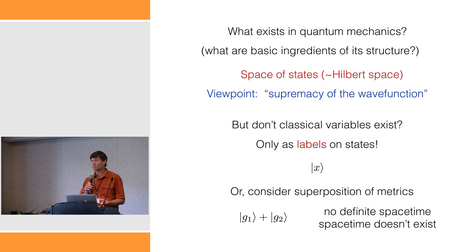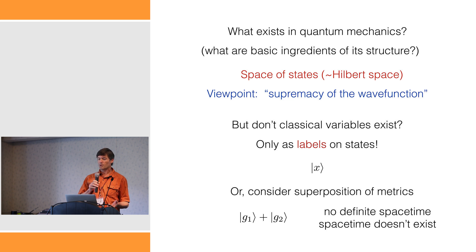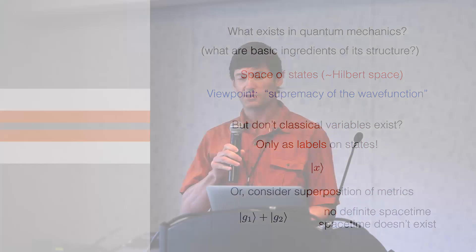If you think about the classical metric — does that exist? Or classical space-time? Well, in a quantum theory, that's far from clear, because we could certainly think about a superposition of metrics. And in such a state, there's no definite space-time that exists. That's really one of the kinds of lessons we need to take seriously in a quantum theory.